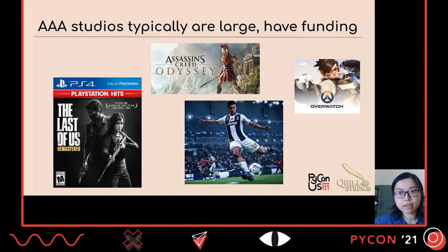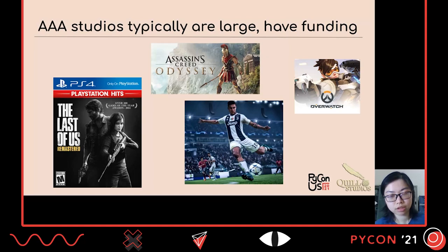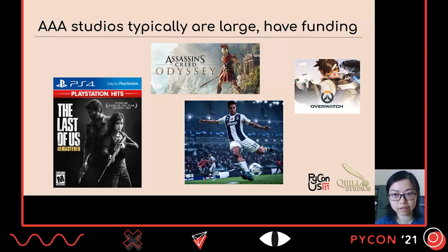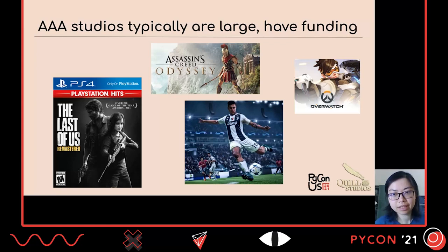There are different types of studio sizes. The traditional gaming route involves AAA studios — studios with very massive headcount, budget, and everything. Think Ubisoft, Blizzard, Activision, making games like FIFA, Uncharted, The Last of Us, Assassin's Creed. These studios make the most well-known games with the highest budgets, pushing the boundaries of technology because they're partnered with NVIDIA or AMD. Their games are purchased and played by millions of people. To make a single one of these games, there are tens of thousands of developers, artists, and everyone else on the project.